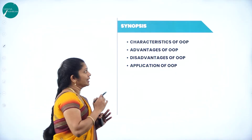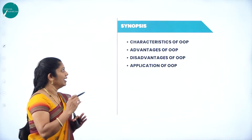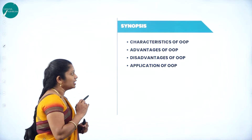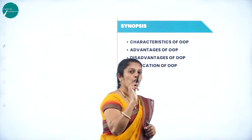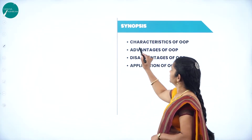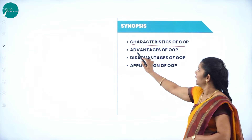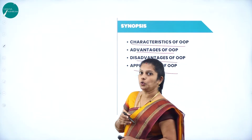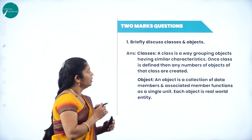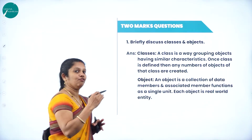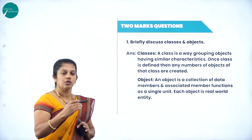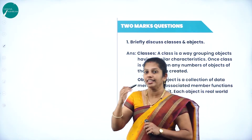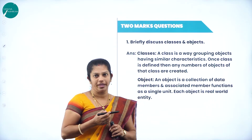The major synopsis for this chapter includes: the characteristics of object-oriented programming, advantages of object-oriented programming, disadvantages of object-oriented programming, and the applications of OOP. For two marks, you may expect questions like: write any two features of OOP, any two advantages, any two disadvantages, or any two applications.